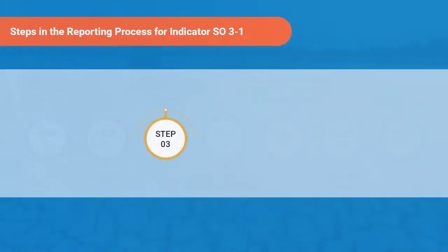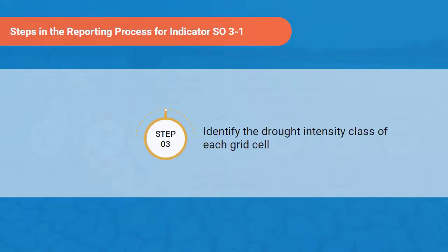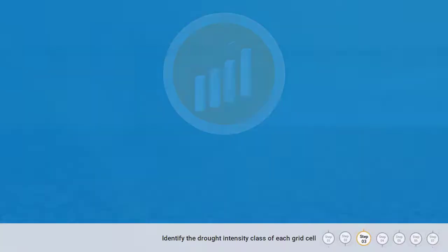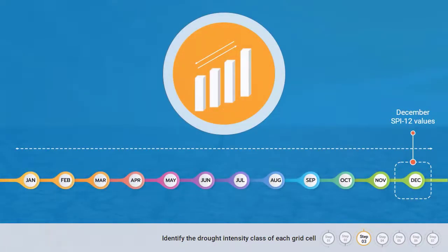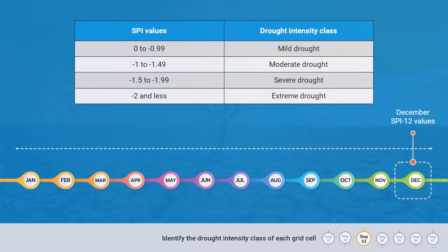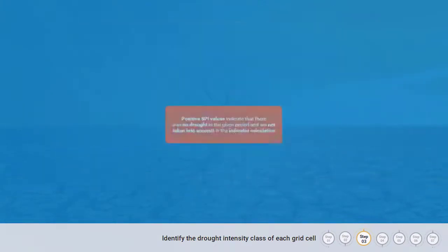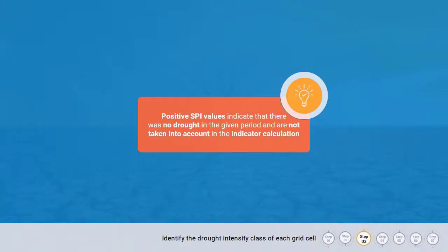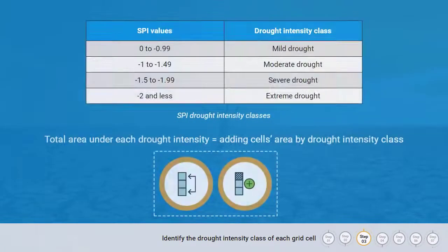The third step in the reporting process is identifying the drought intensity class of each grid cell. The December SPI-12 values, representing the precipitation deficits or excesses over the January to December period, are used to assign an SPI drought intensity class to each grid cell. Positive SPI values indicate no drought in the given period and are not taken into account in the indicator calculation. The total area under each drought intensity class is estimated by adding the area of the grid cells in each class.